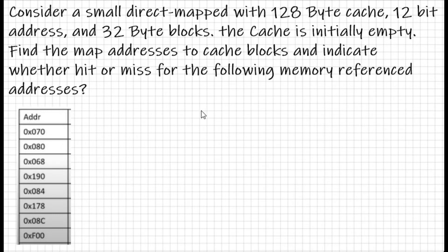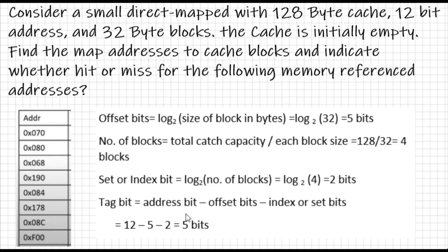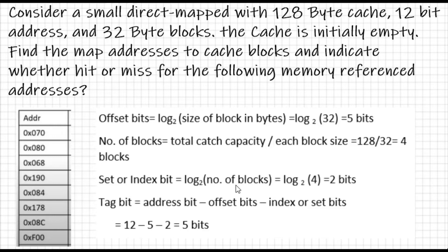Using these parameters, we will calculate the offset bits, set bits, and tag bits. For calculating the offset bit, the formula is log base 2 of the size of the block in bytes. The block size is 32 bytes, so log base 2 of 32 gives you 5 bits.